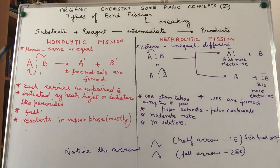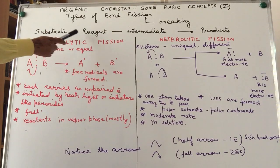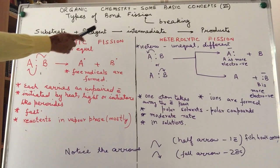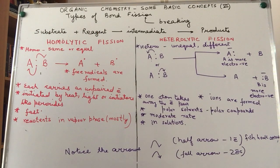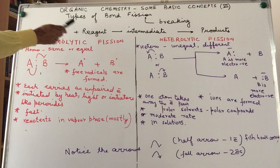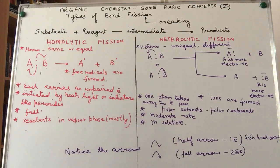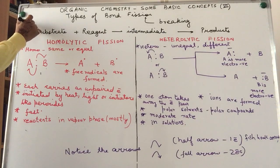The substrate gets attacked by a reagent in order to form an intermediate which, being unstable, breaks down to form products. When a reagent attacks the substrate, the substrate undergoes breaking up of the bond in order to be able to form new bonds to give us the intermediate. This breaking up of the bond can be simply indicated by the word lysis.